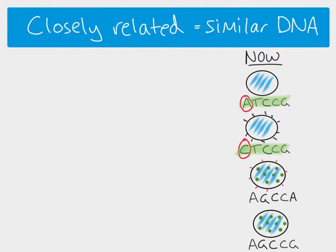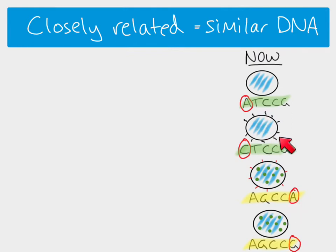Looking at the next two organisms, we can also see that they have similar sequences to one another and they only differ in one base, so again these two are very closely related to each other. These two are more closely related to each other than they are to the other two, and vice versa.